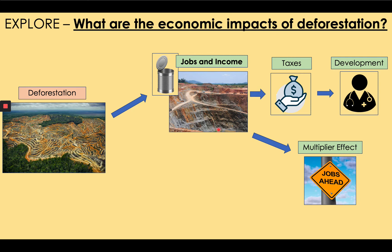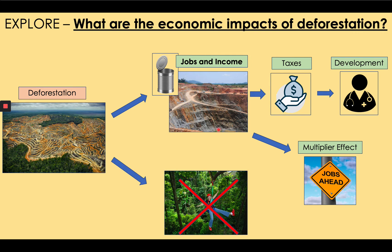Another significant source of income for the Malaysian government and people is from ecotourism — that is, tourists coming to visit the rainforest and see the wildlife. Deforestation prevents this. Tourism in Malaysia is significant, providing more than $500 million every year, but that has decreased in the last 20 years. Because of deforestation, people are not coming as much as they were in the past — there's less to see, fewer animals, fewer plants. So while there may be positive economic impacts, there are also negatives.